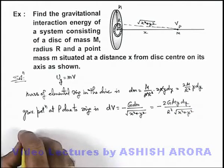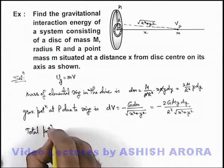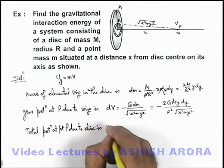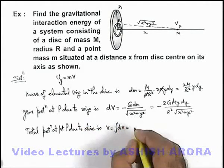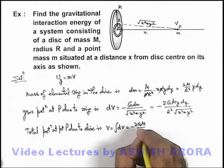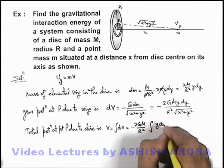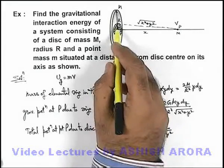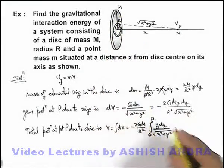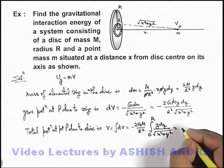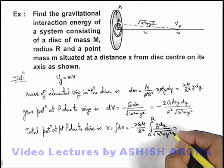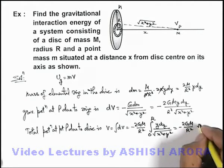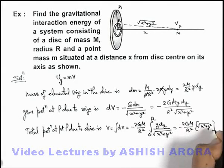If this is dV, then the total potential at point P due to the disc is V equals the integration of dV. Since minus 2GM divided by R² is a constant, we integrate y dy divided by √(x² + y²), with y going from zero to R. Using substitution for the denominator, this integrates to minus 2GM divided by R² times √(x² + y²), evaluated from zero to R.